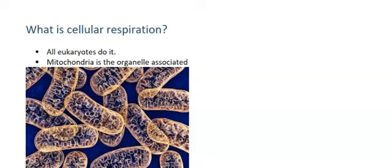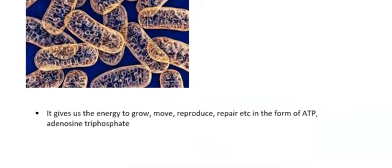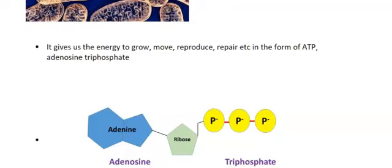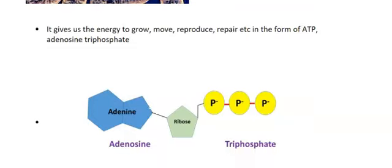The organelle that we associate with cellular respiration is the mitochondria and it's important because it gives us the energy to grow, move, reproduce and repair and all those Mrs. Gren things, and that energy comes in the form of something called adenosine triphosphate, which we more commonly call ATP.